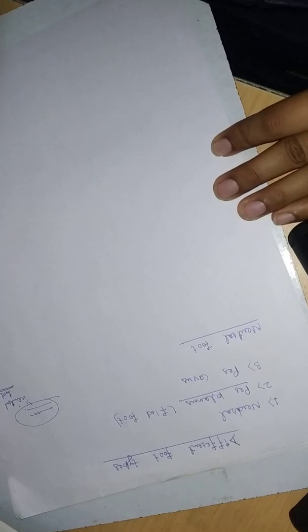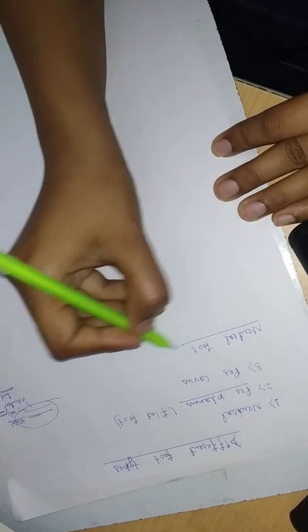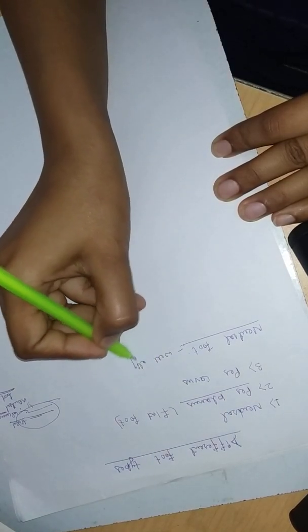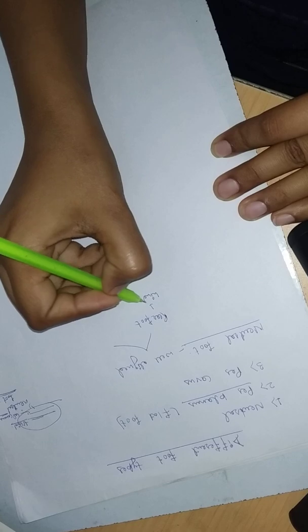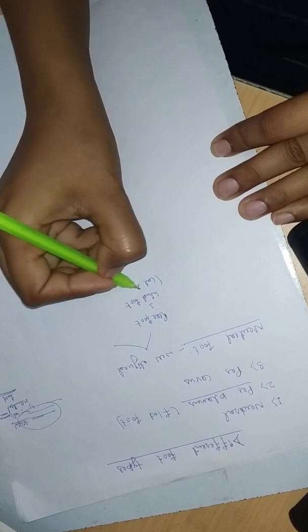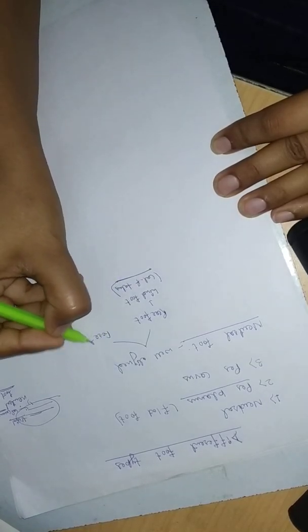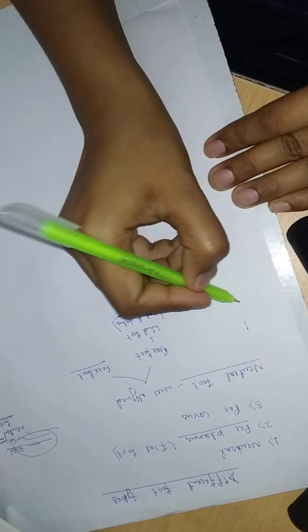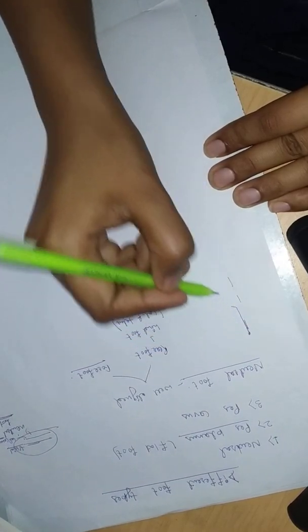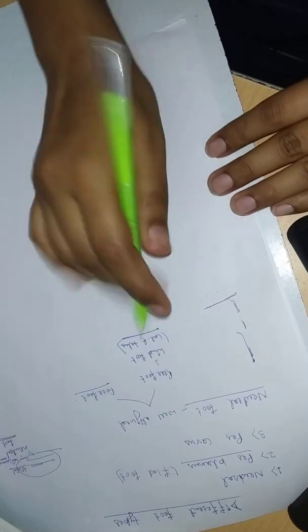Neutral foot means there is no deformity in the foot. You should have a normal foot. We divide the foot into three parts: first is forefoot, mid foot, and hind foot. Hind foot is also known as rear foot which is made up of calcaneus and talus, both are tarsal bones.